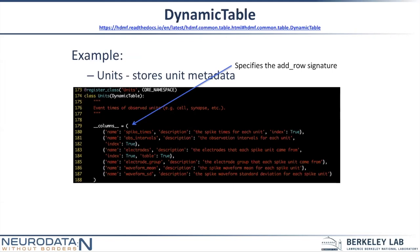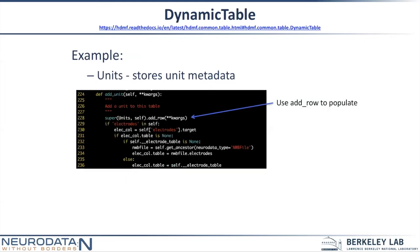That's how you define columns — adding extra data in one dimension. To populate all those columns you use the add_row method. Here we've added an add_unit method to Units for doing some additional things. In this section you can see where we're linking units to electrodes, and the very first thing it does is call the add_row method, then some additional logic to connect the spike unit to the electrodes if that was provided.